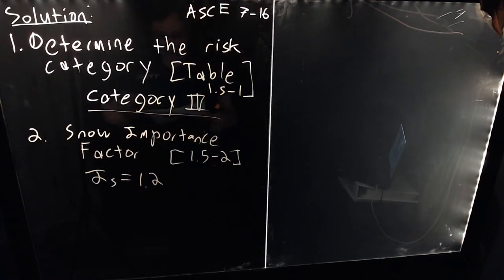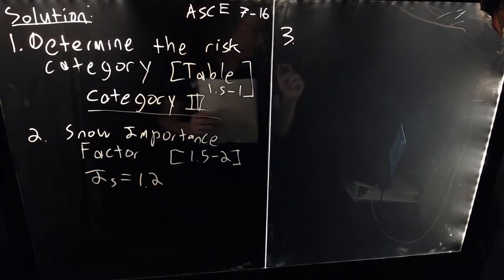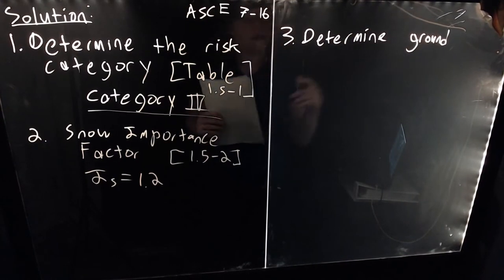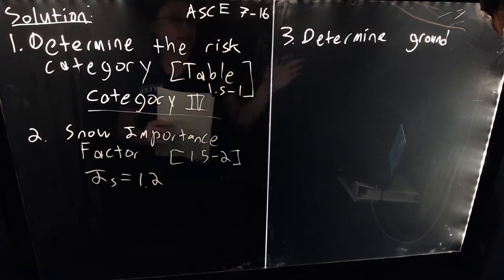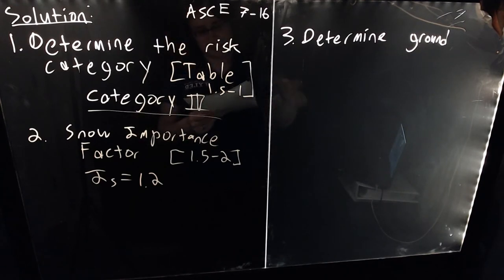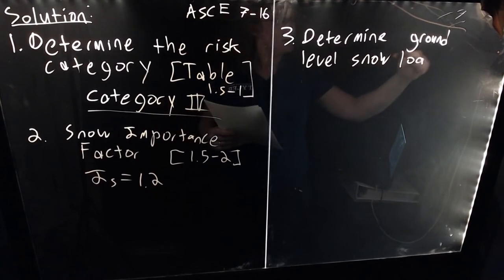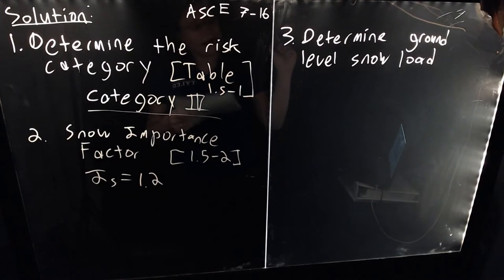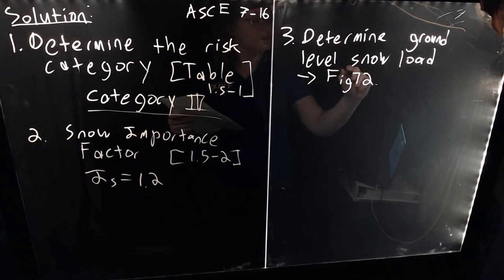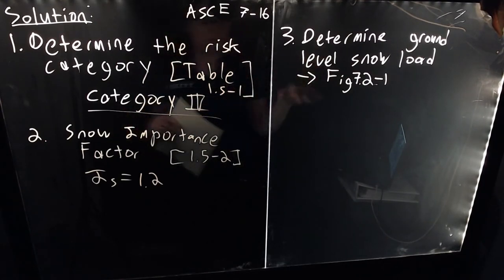Step 3 is to determine the ground level snow load PG. This is essentially: if you have a flat open field without any buildings nearby, what is the expected 2% annual return snow load in PSF on the ground? To find this, I first look in Figure 7.2-1, a map covering the entire United States showing expected snow loads. However, many states with closely varying changes in elevation and climate have separate tables that call out specific counties and cities rather than just a map value.